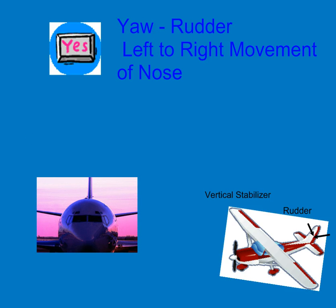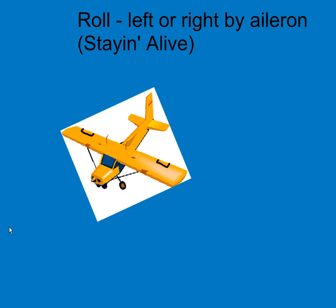The next one we're going to look at is roll. The roll is controlled by the ailerons, and the ailerons are located right over here on the wings. In a roll, I need to have one aileron up and one aileron down, and it's always going to roll to the side that I have up. So if I have the left aileron up, the plane is going to roll to the left. If I have the right aileron up, then it's going to roll to the right.